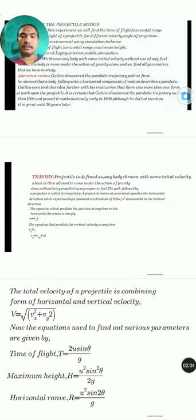Literature review: First of all, Galileo discovered the parabolic trajectory path. At first he showed that a body falling with horizontal component of motion describes a parabola.